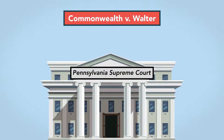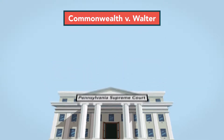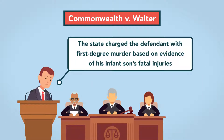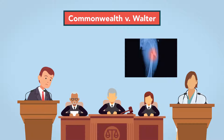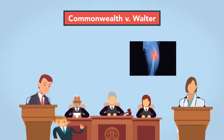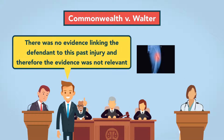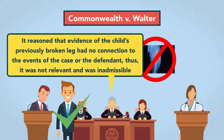In Commonwealth v. Walter, however, the same court deemed evidence irrelevant and inadmissible under Rule 401. In that case, the state charged the defendant with first-degree murder based on evidence of his infant son's fatal injuries. Medical personnel found that the victim died from being treated too roughly, which led to shaken baby syndrome. The prosecution wanted to introduce x-rays that showed an old leg injury the baby previously suffered, to show a history of abuse at the hands of the defendant. The defense pointed out that there was no evidence linking the defendant to the past injury, and therefore that the evidence was not relevant. The court agreed with the defense, reasoning that evidence of the child's previously broken leg had no connection to the events of the case or the defendant. Thus, it was not relevant and was inadmissible.